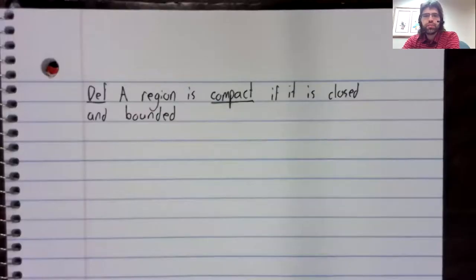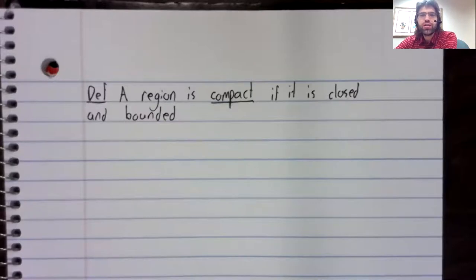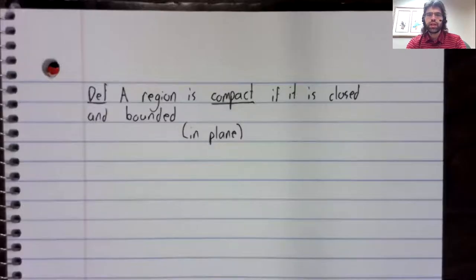I said in my preliminary remarks in this video that this definition was important. It perhaps doesn't look like much. A region is compact if it is closed and bounded. And this is true in the plane, also in R3 and R to the N. But we'll be looking at applications in the plane.